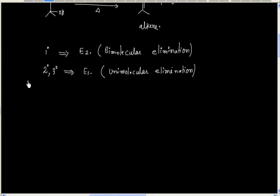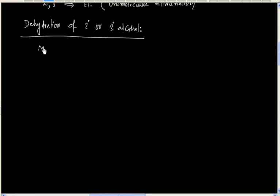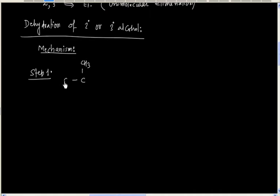Let us discuss the dehydration of secondary or tertiary alcohol. The mechanism involves three steps. Let us take a general tertiary alcohol as our example.